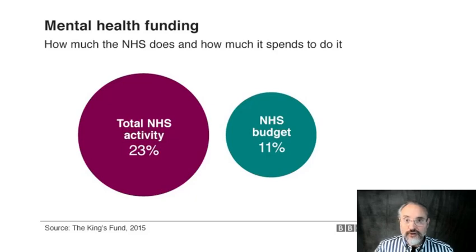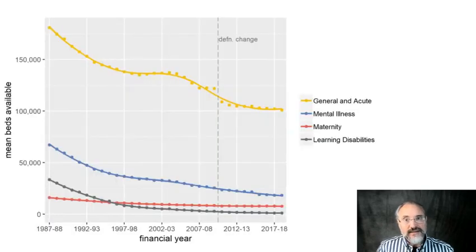There's another two things that are important. One of them is the number of beds have declined. This is the number of beds in general health over the last 30 years. They've been reduced quite a bit, but if you see psychiatric beds, they've actually been cut in more than half in the last 30 years. That means there are a lot of people with mental health problems in the community because there's not so many psychiatric beds.